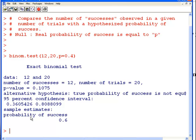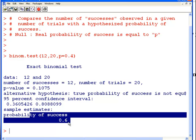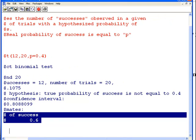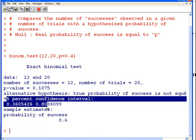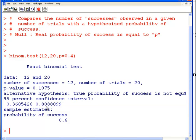But based on the data, based on the sample itself, the probability of success based on the sample is 0.6, and with a 95% confidence interval of 0.36 to 0.80.